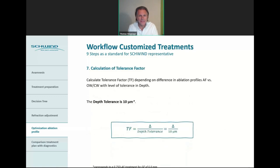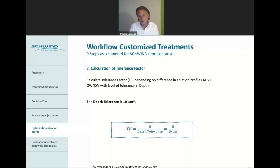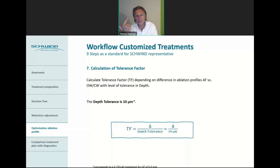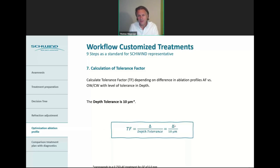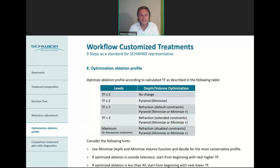Step 7 is the calculation of the tolerance factor. This tolerance factor depends on the difference in ablation profile between aberration-free and customized treatments, with a level of tolerance of 10 microns — because this represents about three-quarters of a diopter in an aberration-free treatment at a 6 mm zone. In our example, the delta was 15 microns: 15 divided by 10 microns gives a tolerance factor of 1.5. This 1.5 tolerance factor guides us for the next step — the optimization of the ablation profile.